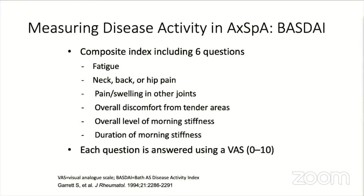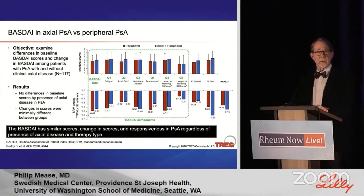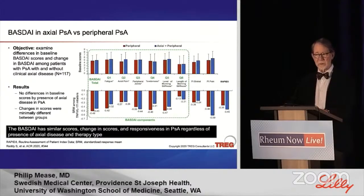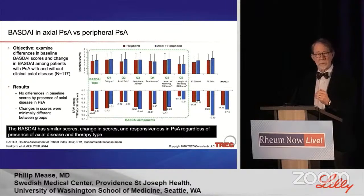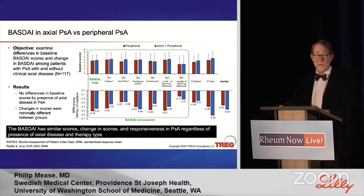The six patient-reported questions of the BASDAI include fatigue, which could be non-spinal; pain, swelling, and other joints; overall discomfort from tender areas including enthesitis; and two questions about morning stiffness. A key study from five centers — lead author Samia Lopa at NYU, senior author Alexis Ogdie at Penn — asked the question among 117 PsA patients with or without axial disease, looking at BASDAI responses before and after treatment, and found no difference between those with spine disease and those without, unfortunately impugning use of BASDAI as a surrogate.